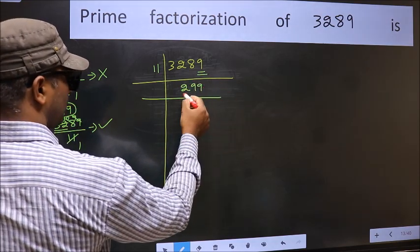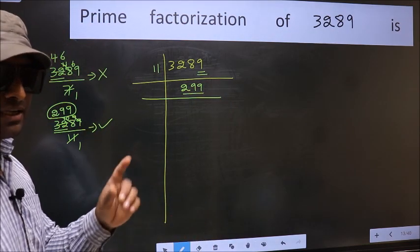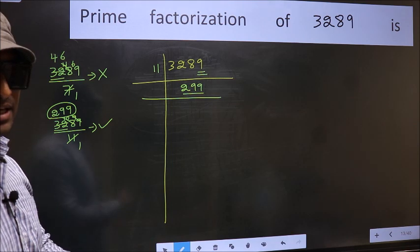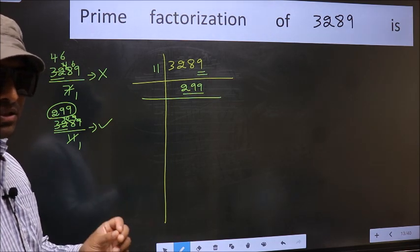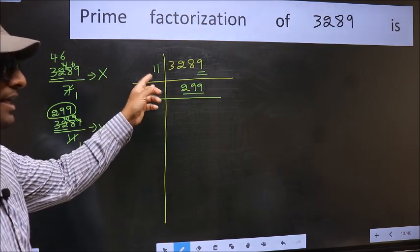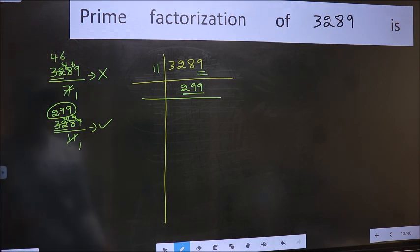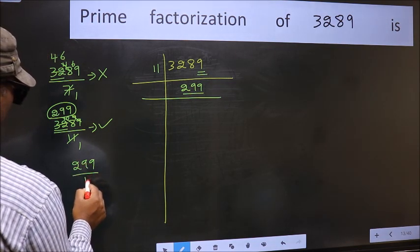Now for this number, we don't need to check whether it is divisible by 2, 3, 5, or 7, as we had already checked earlier. So we should start checking divisibility of this starting with 11. So let us check 299 by 11.